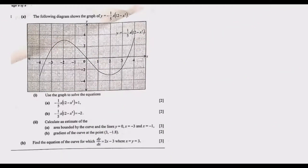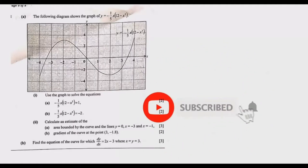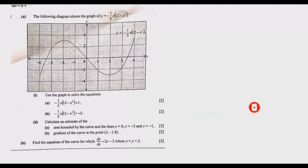Welcome to today's session. Today we are looking at question 8 from the 2021 GCE Mathematics Paper 2. Question 8 shows the graph of y = -1/5 · x(12 - x²). The question asks us to use the graph to solve the given equations.